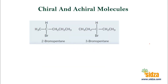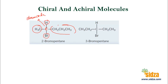Let's find out which molecules are chiral and which are achiral. Look at this molecule — is it chiral or not? Yes, this is chiral because it has a chiral center — a carbon with four different groups attached: hydrogen, bromine, a methyl group, and a propyl group. Four different groups attached, so this is a chiral center, a stereocenter. This carbon is not chiral because it has three hydrogens attached. So the molecule is chiral, because if it has one chiral center, the molecule is chiral.